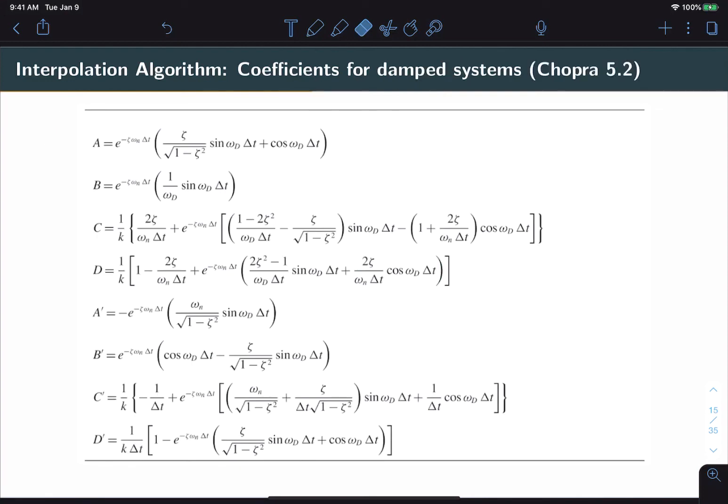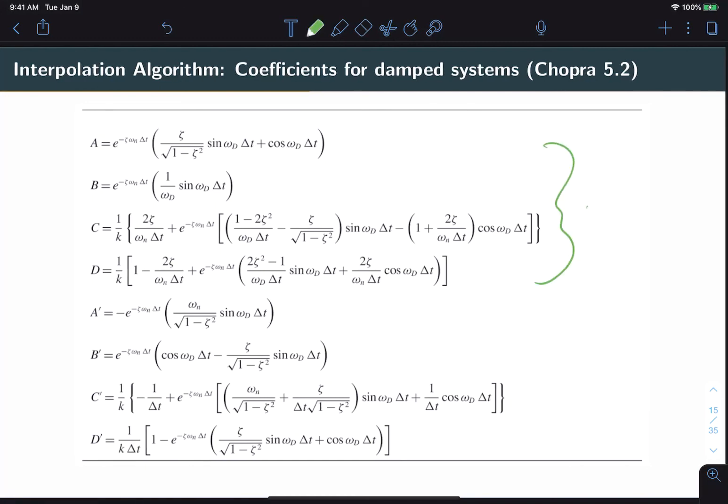Now the coefficients that we just derived were for an undamped system. We can do the same for a damped system to get the coefficients that you see here. These again are defined in terms of fixed quantities, now including ζ and ωd. But again we can solve for these once before implementing the algorithm. Now a through d are used for finding the value of i+1. I've also included a' through d', which are used in the same way but give u̇i+1. So you can solve for both displacement and velocity at the next time step, which remember you will need both to keep stepping through.